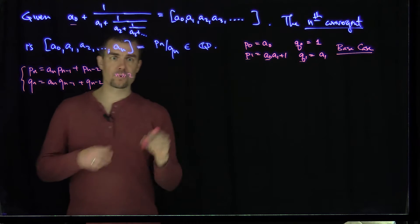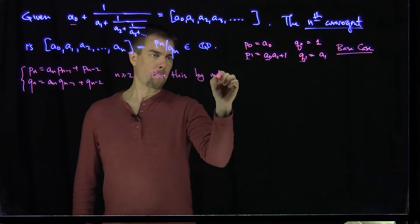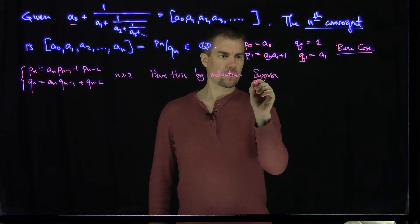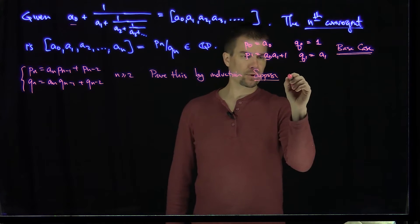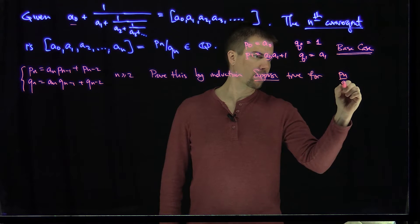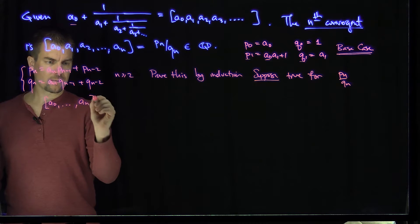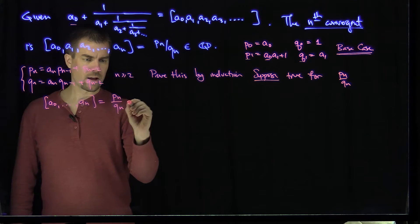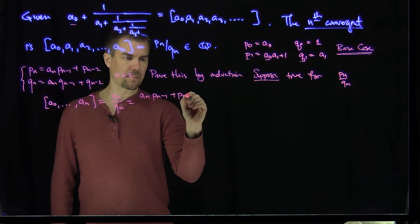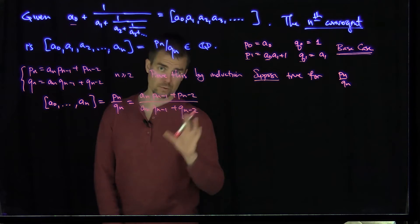We're going to prove these formulas by induction. Since we have the base cases already, let's suppose it's true for level n — that is, for the n-th convergent cn equal to pn over qn. That means [a0, ..., an] equals pn over qn, where pn equals an·pn-1 plus pn-2 over an·qn-1 plus qn-2.